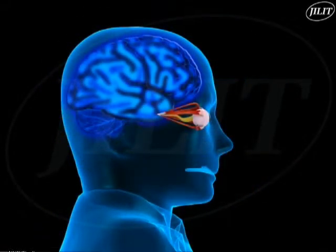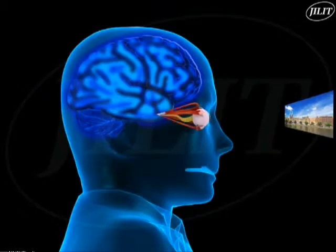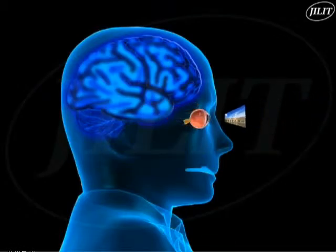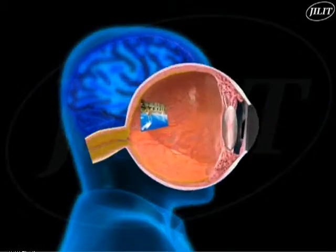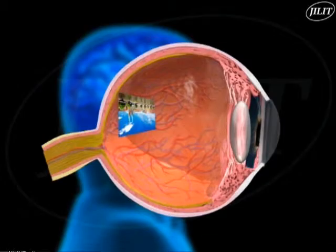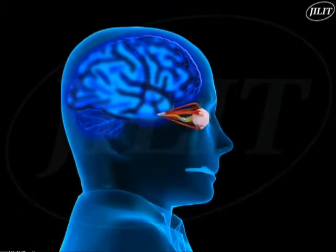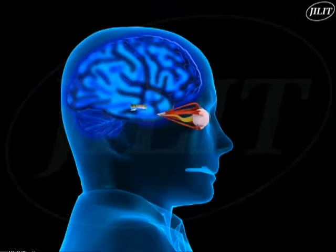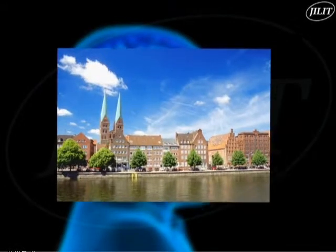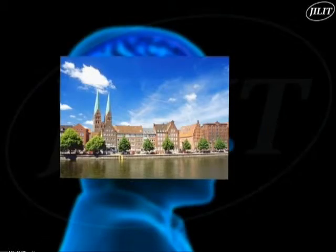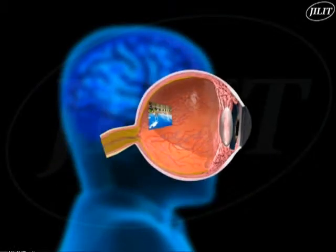But the image made on the retina is always upside down and laterally inverted. Our eyes send the picture to our brain, and our brain turns the picture into an upright form and tells you what you are looking at. So we see things the right way up. Actually, we don't see with our eyes, but rather with our brain.